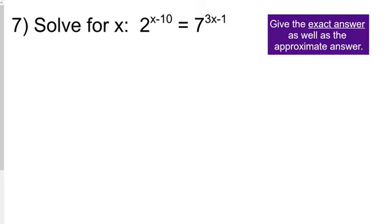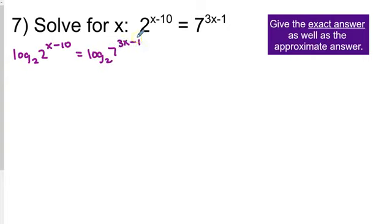I'm going to choose log base 2. So we have log base 2 of 2 to the x minus 10 equals log base 2 of 7 to the 3x minus 1. On the left, you can bring down the x minus 10, and log base 2 of 2 is just 1. On the right, you can bring down the 3x minus 1 in parentheses, but log base 2 of 7 doesn't simplify, so it stays.